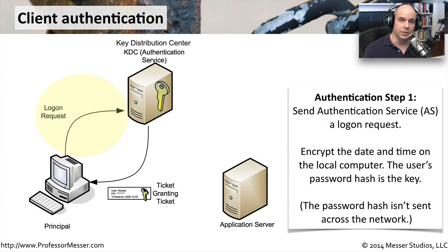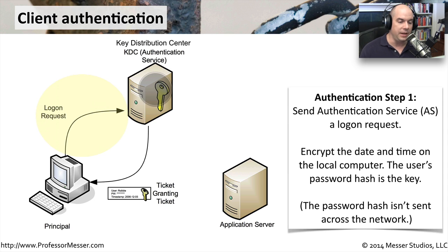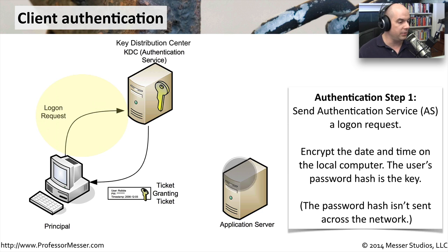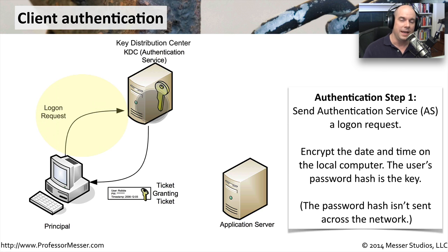Before you can gain access to resources, you first have to authenticate yourself with the Key Distribution Center. This is a two-step process. Our client, called a principal, talks directly to the Key Distribution Center. We send a logon request from our device to the KDC, encrypted with the date and time on the local computer, using our password hash as the key. We don't send the hash to the KDC — the authentication service already has our password, so it knows what key to expect. This entire process is encrypted and very secure.